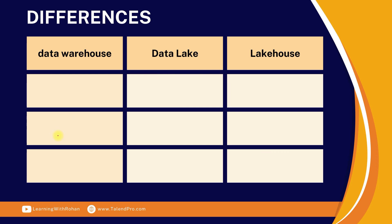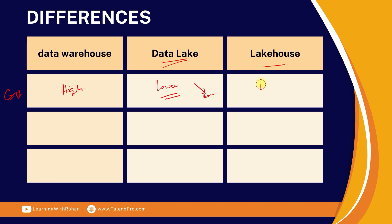On cost, a data warehouse is higher because you need all the database management systems in place. A data lake is lower cost since it's stored on the file system with cheaper storage — compute is only applied when querying. A lakehouse uses a combination of storage and compute, so the cost is balanced — medium, somewhere in between.